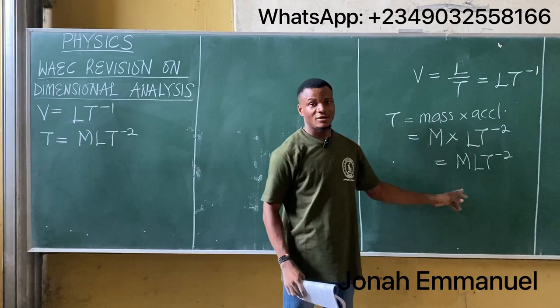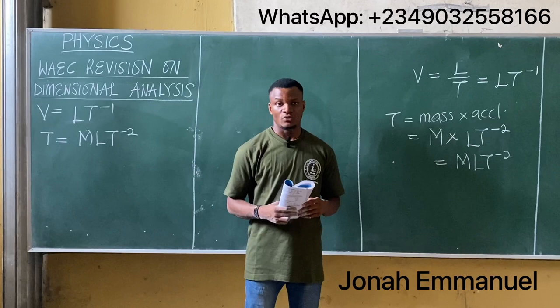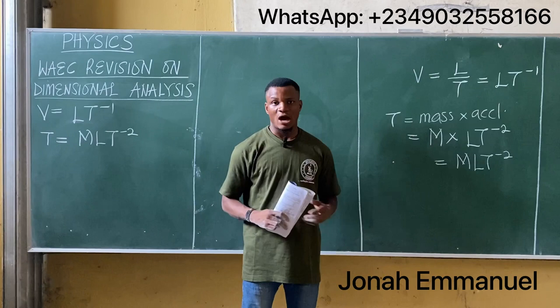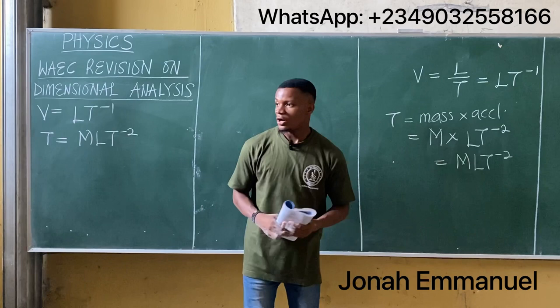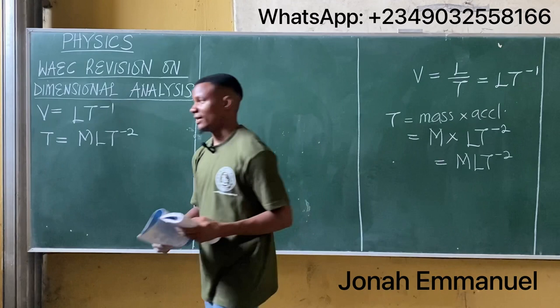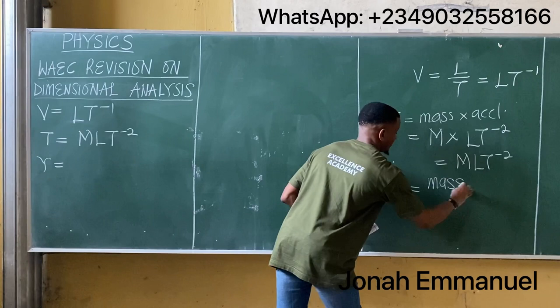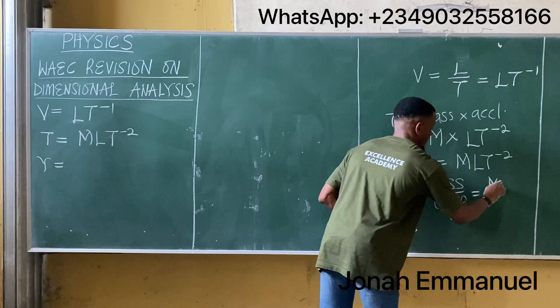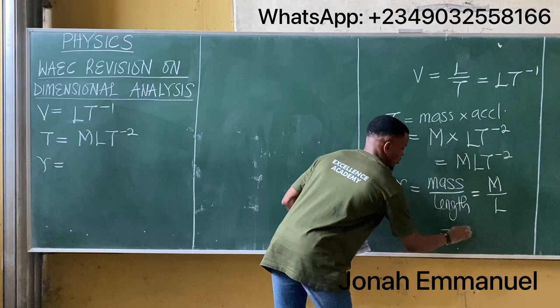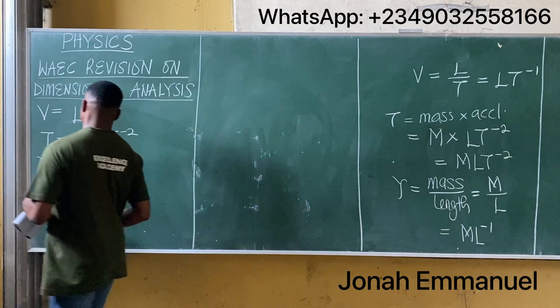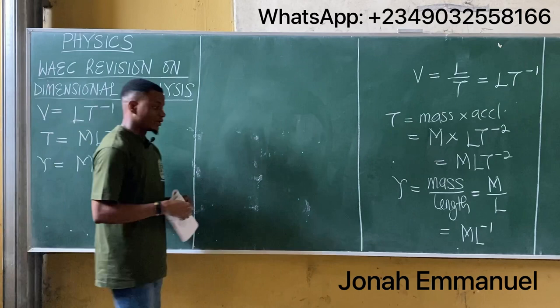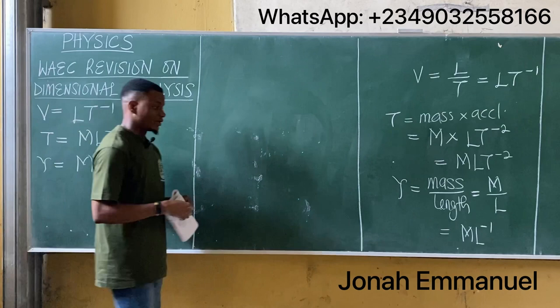If you don't understand how we got these dimensions, we already treated this in a previous class — I'll leave a link to the full tutorial course on dimensions in the description. Now, the next parameter given is mass per unit length, which is gamma. Gamma equals mass over length, so that's M over L. Written in index form that's M L to the power minus one, so the dimension of gamma is M L to the power minus one.